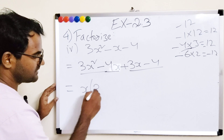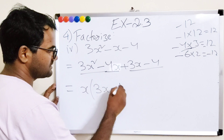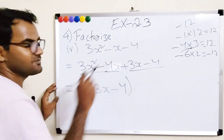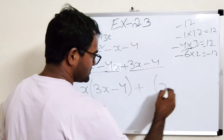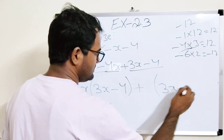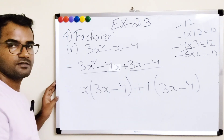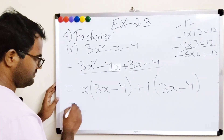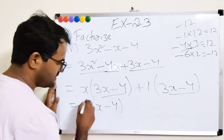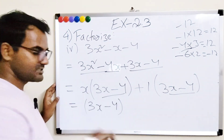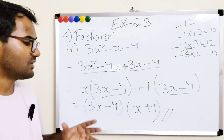Grouping: first group 3x² minus 4x, second group 3x minus 4. Taking x common from the first: x(3x minus 4). For the second group, write the same bracket (3x minus 4) with 1 outside: 1(3x minus 4). Both groups share (3x minus 4), so the answer is (3x minus 4)(x + 1).